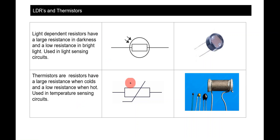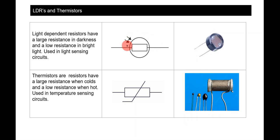Thermal resistors have large resistance when cold and low resistance when hot, and are used in temperature-sensing circuits. They enable a circuit to sense temperature in a liquid or environment and increase or decrease the flow of electricity accordingly. For example, thermal resistors in kettles kick in at a certain temperature and stop electricity flowing to the heating element, turning the kettle off.